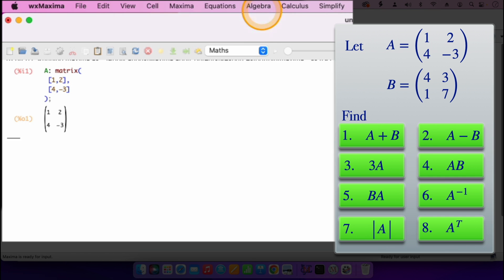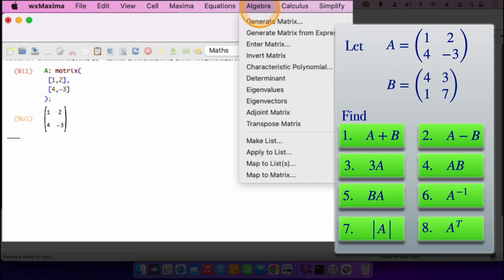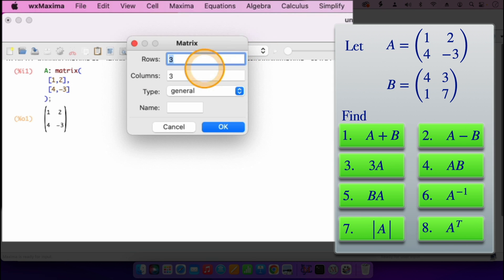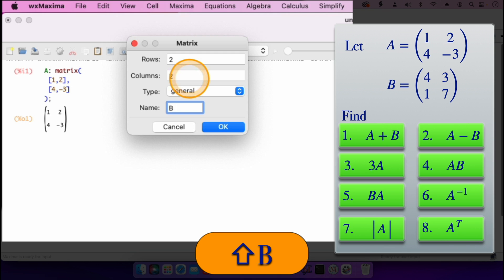The next step now is to enter the matrix B. I'll go again where it says Algebra, repeating the same step, enter matrix, then specify the rows. There are two, specify the columns, there are two, and this is the matrix B now.